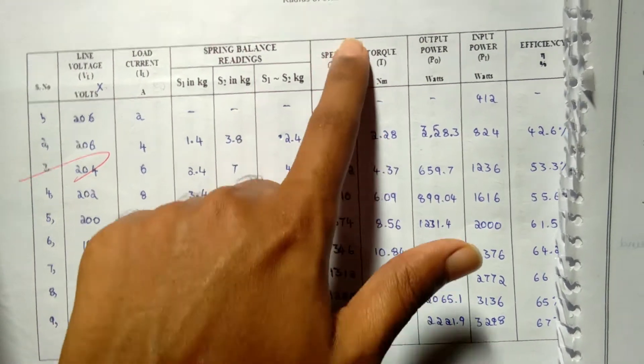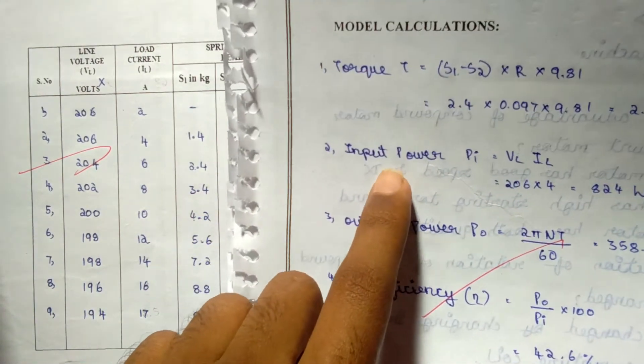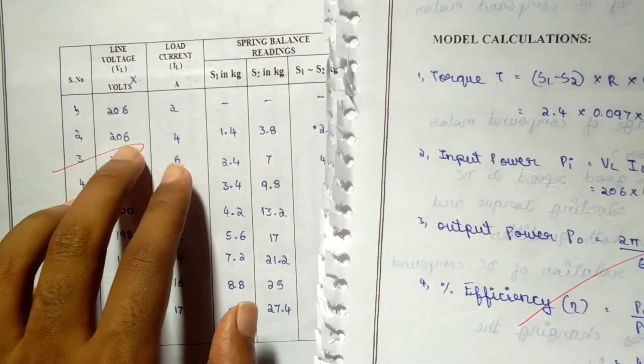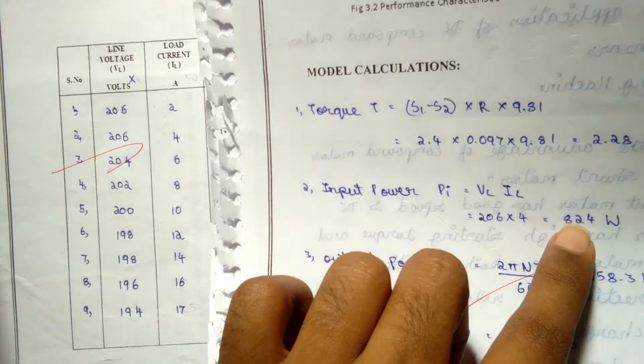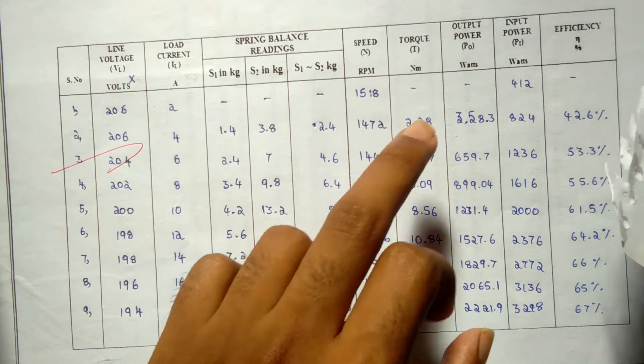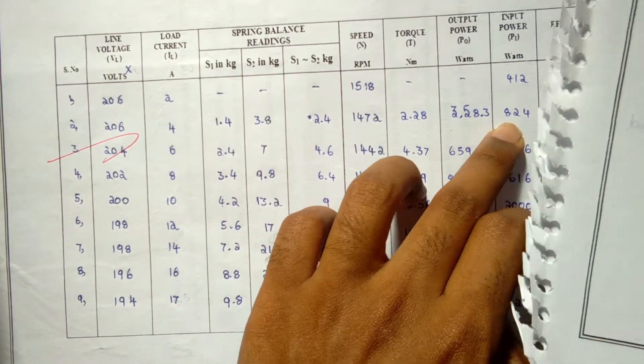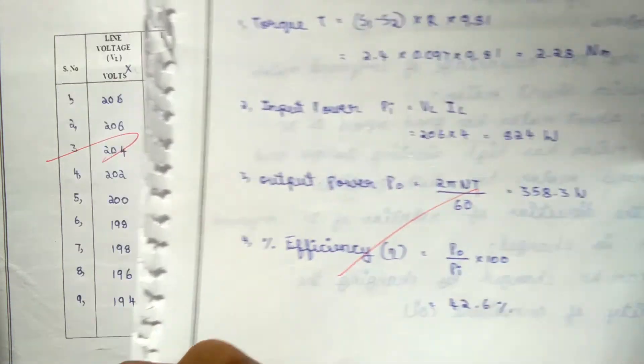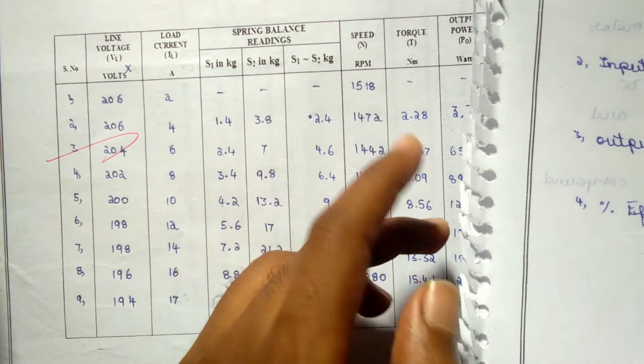The torque, and then input power Pi = VL × IL, VL × IL, 824 watts. And then output power Po = 2πNT/60. After substituting these values, the output power will be 358.3 watts.